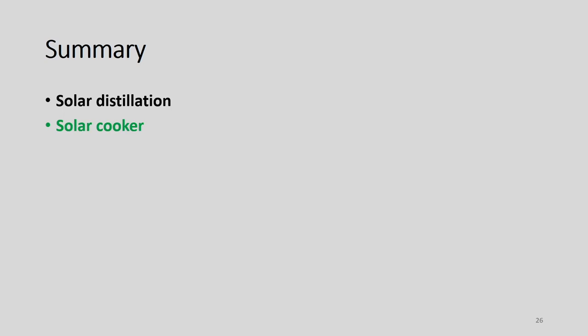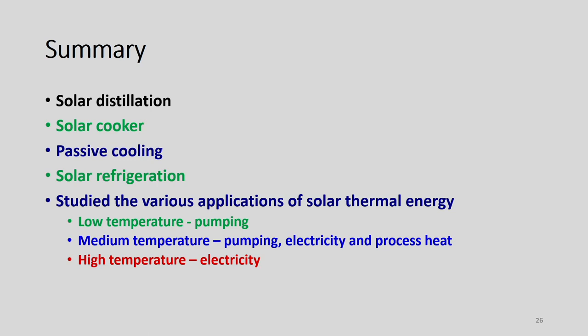To summarize: we have discussed solar distillation — its importance, performance analysis, and working. We covered solar cookers, including thermal analysis and a numerical problem. We learned about passive cooling systems, solar refrigeration (aqua ammonia and lithium bromide systems), and various solar thermal energy applications: low-temperature pumping, medium-temperature electricity and process heat generation, and high-temperature electricity generation. Thank you very much for watching.